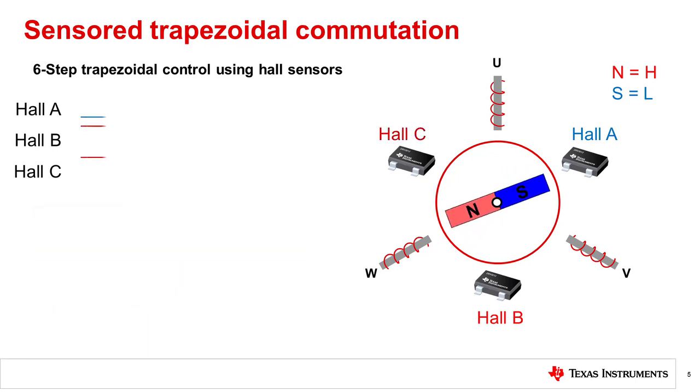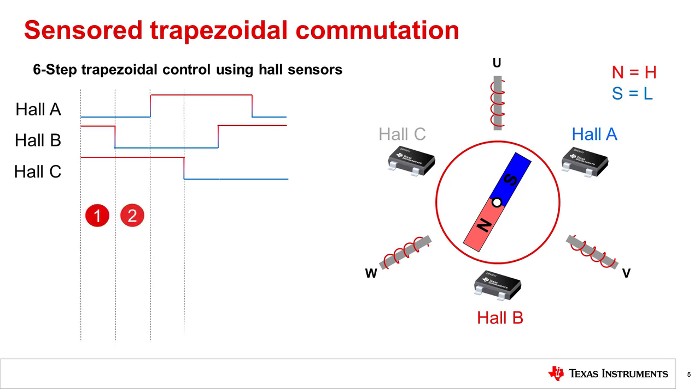We can observe an example of how hall effect sensors detect the magnetic field from the motor during each of the six states of the electrical cycle. As one pole of the rotor passes through a hall sensor, it produces either a high or low state based on the configuration. When the opposite pole passes through the hall sensor, it generates the opposite state. The three sensors doing this all at once will produce six states which can be referred to using a truth table.